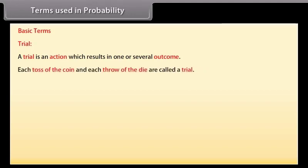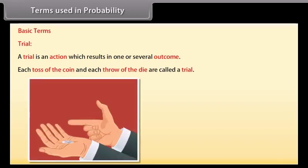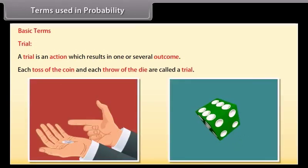Before going further, let's learn about basic terms used in probability. A trial is an action which results in one or several outcomes. For example, each toss of the coin and each throw of the dice are called a trial.